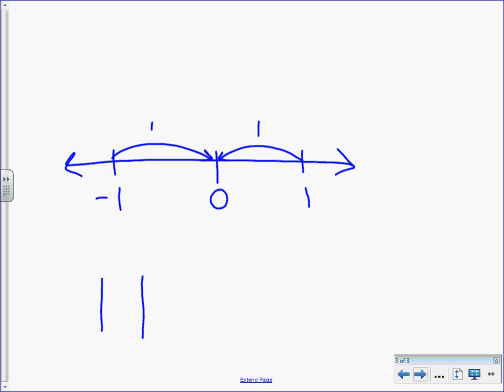The other thing we talked about was absolute value. Absolute value means how far from zero. So, negative one and one. How far is negative one from zero? One space away. How far is one from zero? One space away. So, the absolute value, which is shown with those two big lines, of negative one is one, which is the same thing as the absolute value of one.